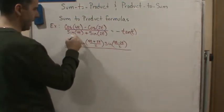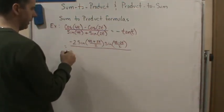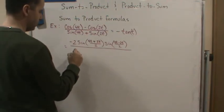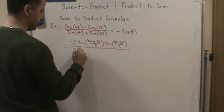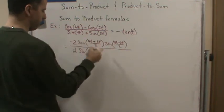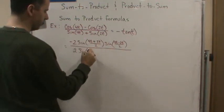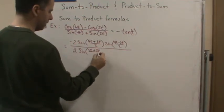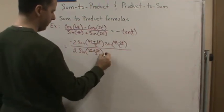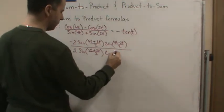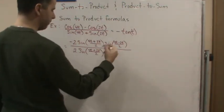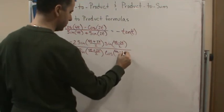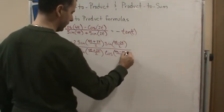Now this is going to give me sine cosine, okay, and it's plus plus. So it's going to be 2 and it's going to be sine alpha plus beta, so it's going to be 4t plus 2t over 2 times cosine of alpha minus beta which is going to be 4t minus 2t divided by 2.